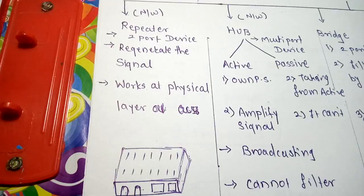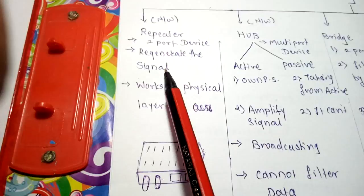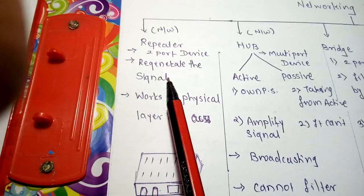This repeater is used to regenerate the signal. As the distance increases, that affects the quality of the signal. So before degradation, the repeater regenerates the signal. Just keep in mind, it regenerates the signal, not amplifies the signal.